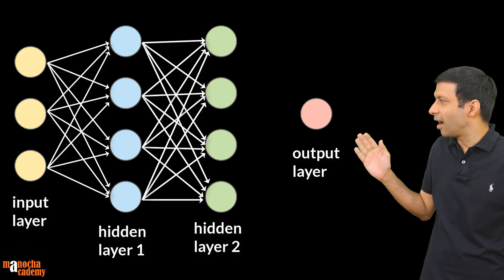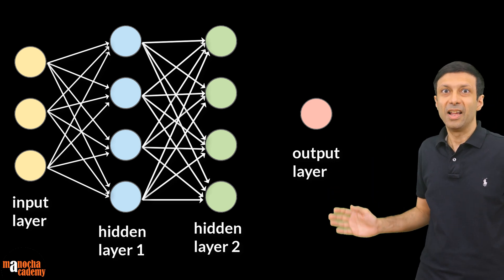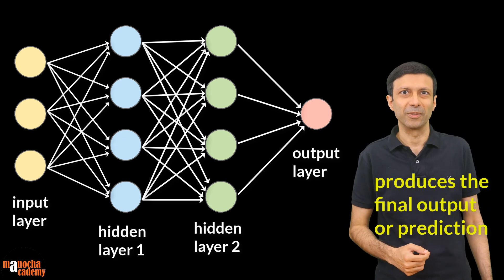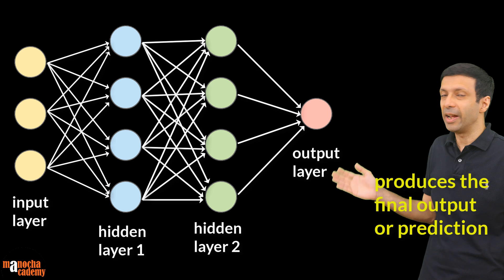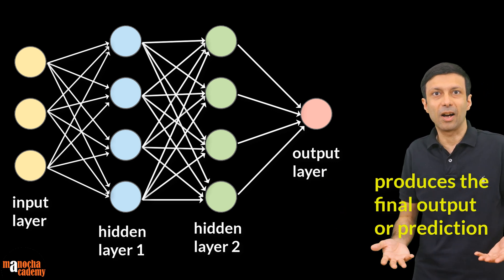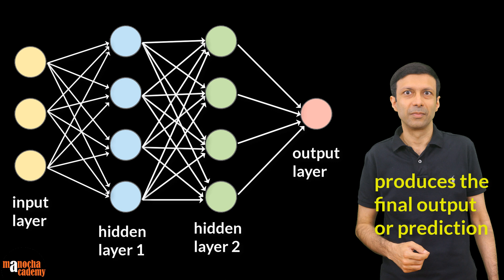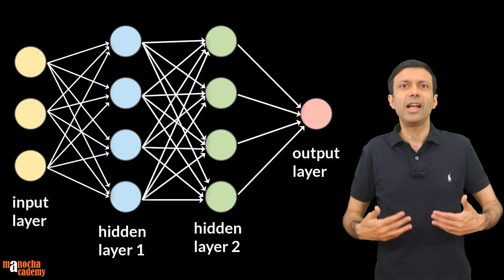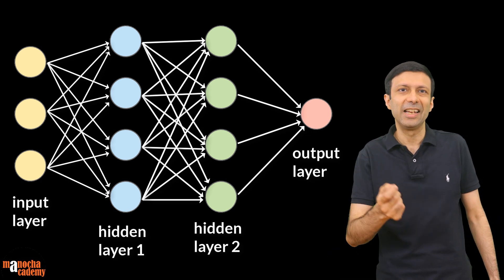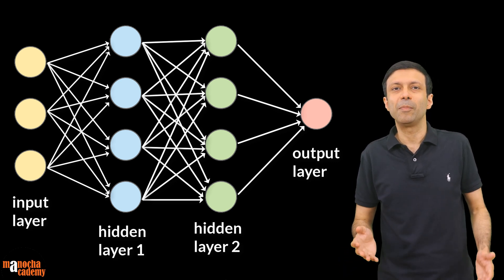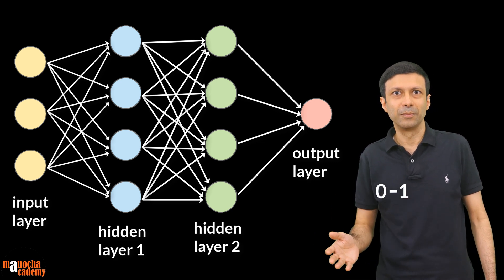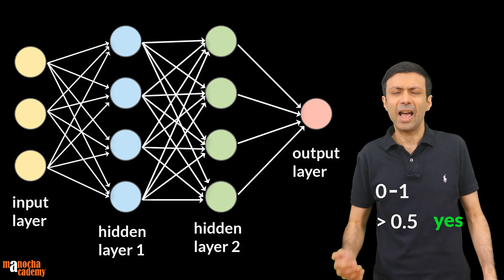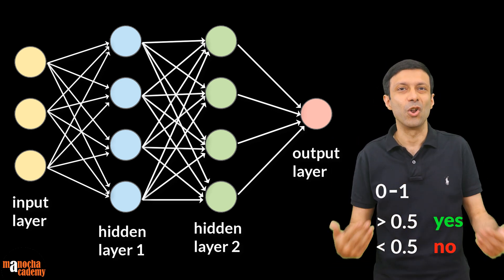The output layer is the last layer of the neural network and its job is to produce the final output or prediction of the neural network. The number of nodes in the output layer depends on the specific task the neural network is designed for. For example, if the neural network is making a yes or no decision, then the output layer typically has a single node. Let's say the output values can be between 0 to 1 — if the output value is above 0.5 then it's considered a yes, and if it's below 0.5 it's considered a no.